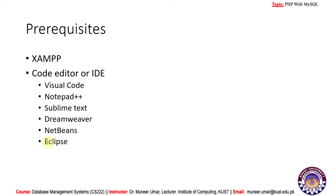For prerequisites, we need an Apache server installed on our system. The best way is to install XAMPP — it is a complete package that includes Apache server, MySQL server, FTP, and more. It is freely available and you can get the download link by searching on the internet.